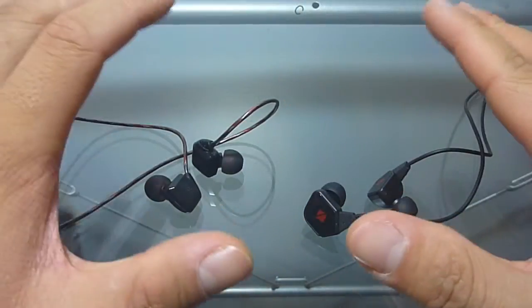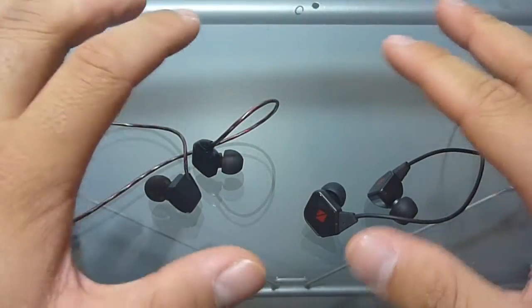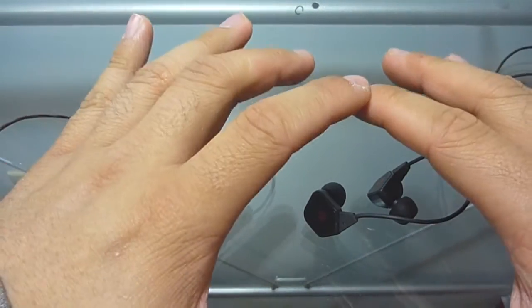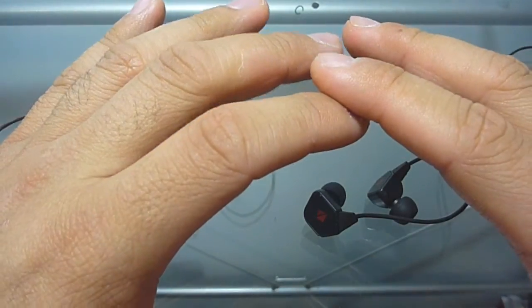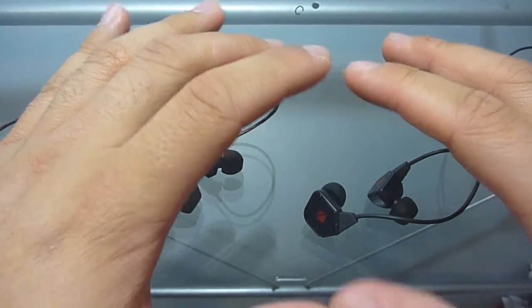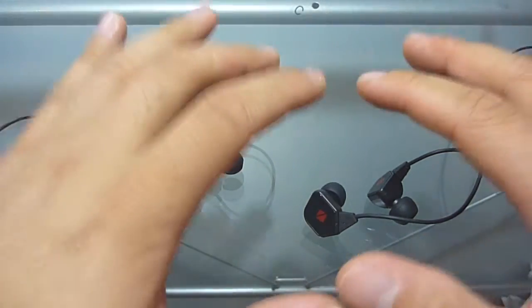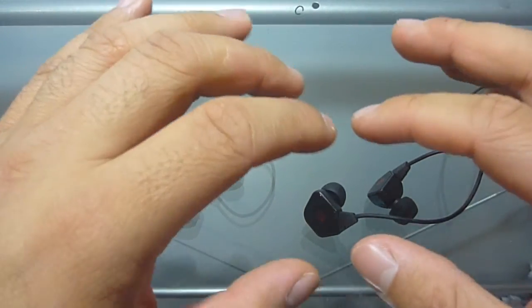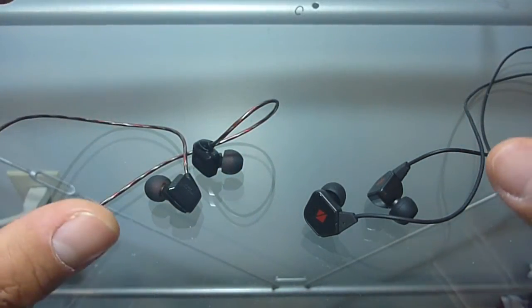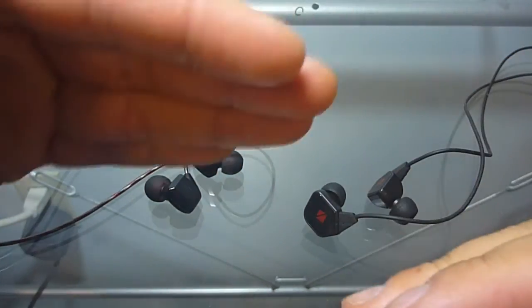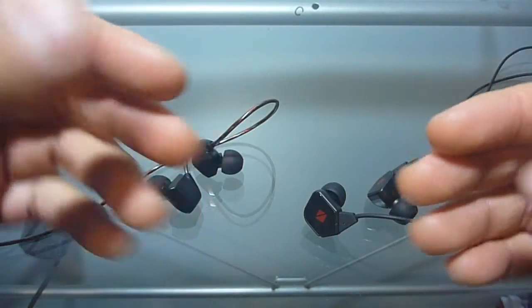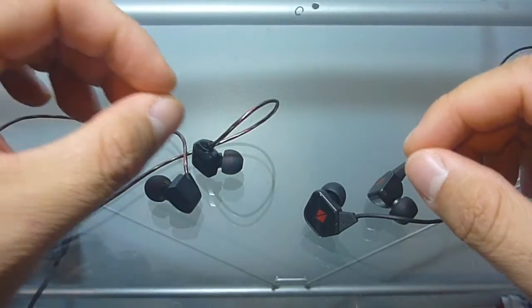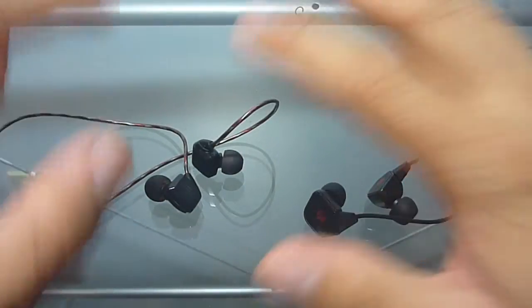Now going into the sound stage, this is absolutely no contest. The Havi's definitely win out because the Havi's are just, I said this many times before, it honestly feels like a full size headphone when I'm listening to these earphones. It's a very out of the head experience, it's better in terms of layering and depth as well and like precision in placing instruments is much wider sounding compared to the GR07s.